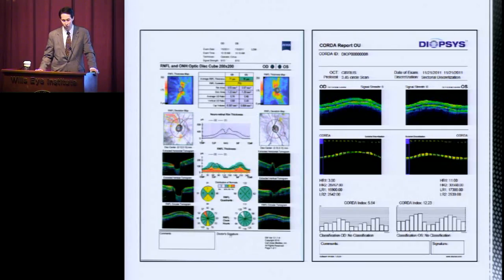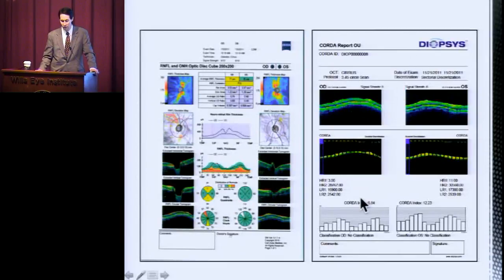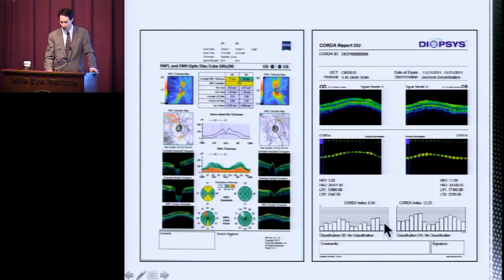This shows you the typical spectral domain OCT, and then the CORDA sub-analysis, showing you the different parameters — HR1 and 2, LR1 and 2 — and also breaking it down further without classification in this printout.